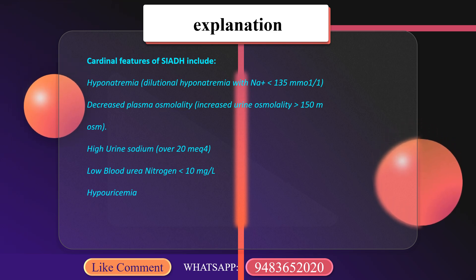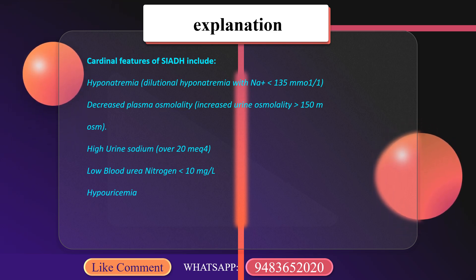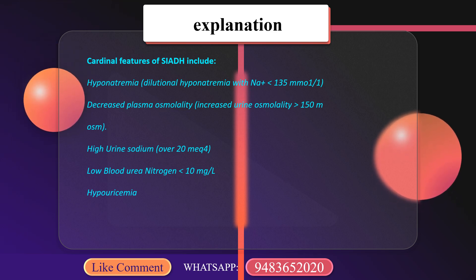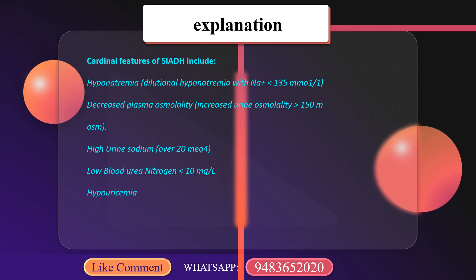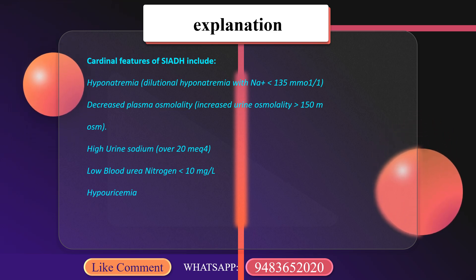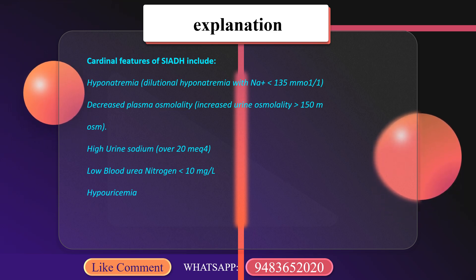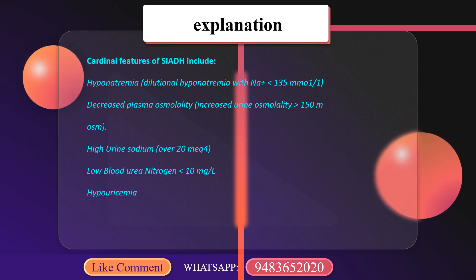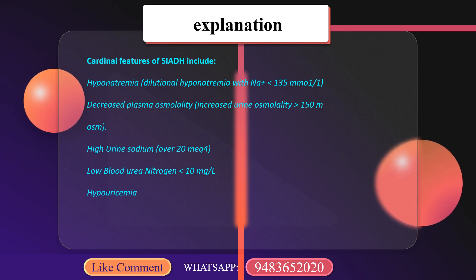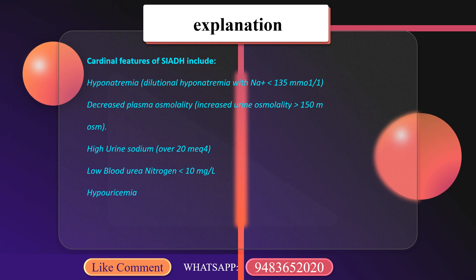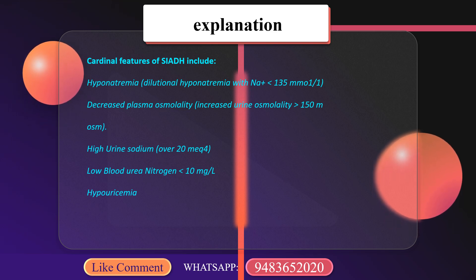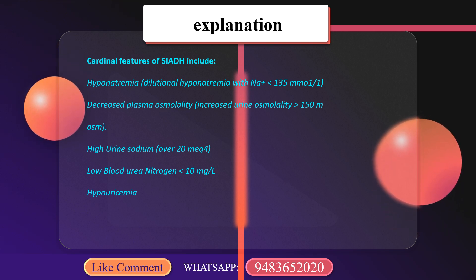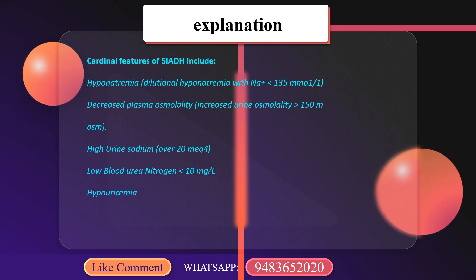The cardinal features of SIADH are: dilutional hyponatremia with sodium less than 135 mmol/L, decreased plasma osmolality, increased urine osmolality (greater than 150 mOsm), high urine sodium (over 20 mEq/L), and low blood urea nitrogen (less than 10 mg/dL). In SIADH, urine sodium is high — not low or normal — which is why option B is the false statement.